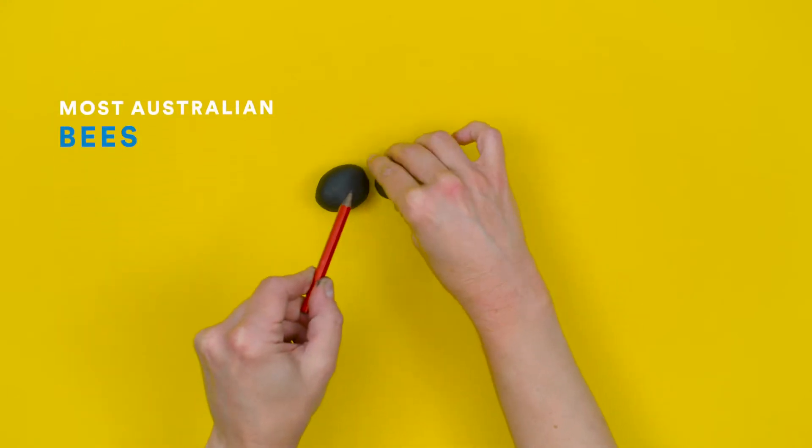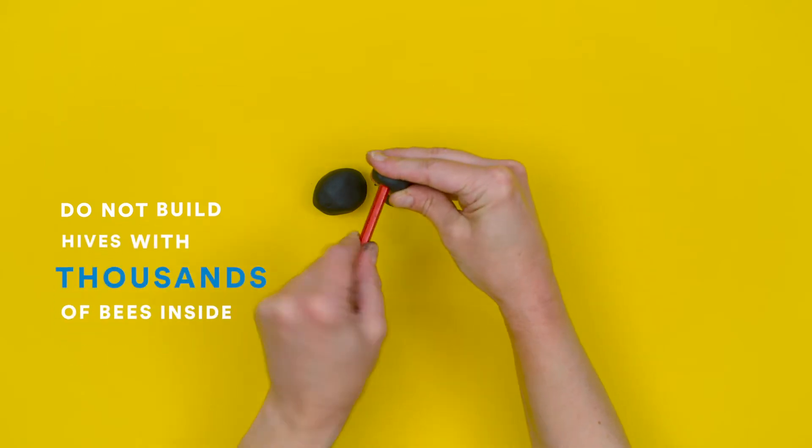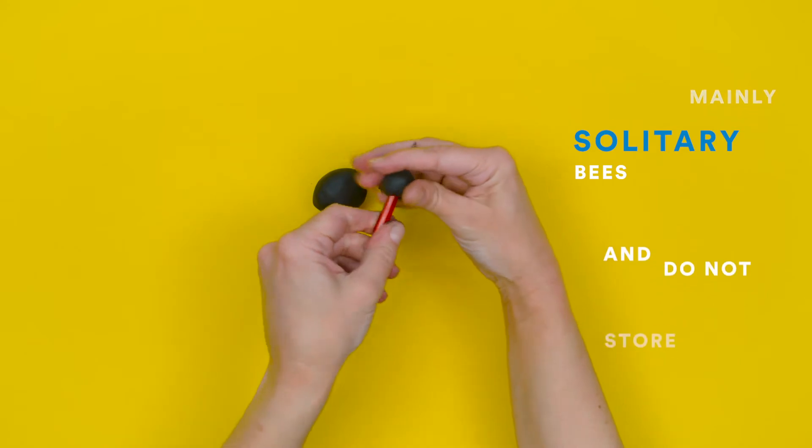Most Australian bees do not build hives with thousands of bees inside. They're mainly solitary bees and do not store honey.